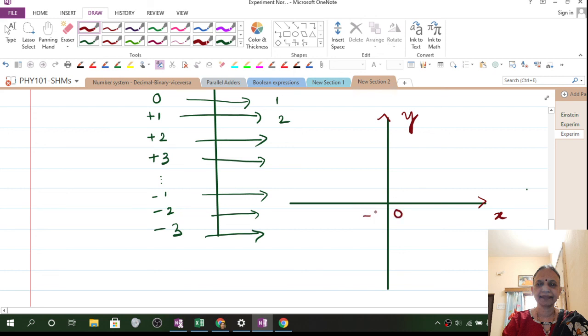So you have 0 error, minus 1, minus 2, minus 3. These are the errors. Sometimes you will get this error also. 1, 2 and 3.